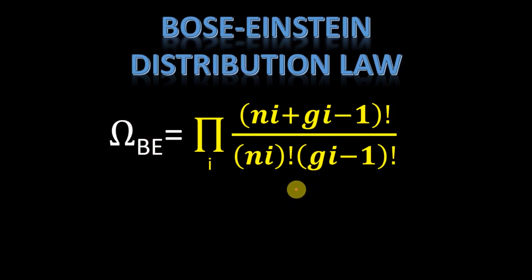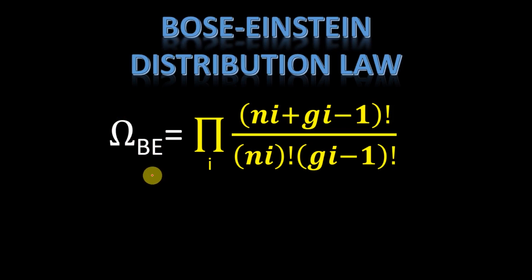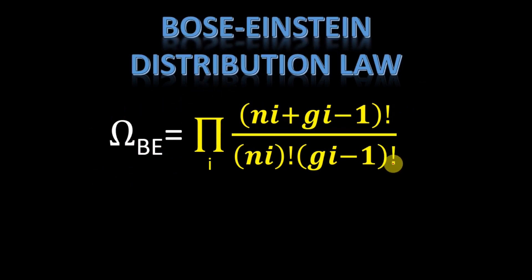Now, similar to Maxwell-Boltzmann statistics, we will take its logarithm, then apply Stirling's approximation, after that take its derivative and put it equal to zero to get the extremum, and from that we will derive the Bose-Einstein distribution law. So let us take its logarithm.